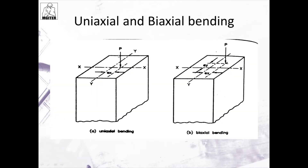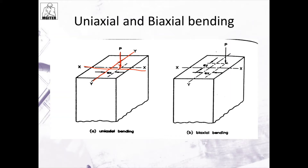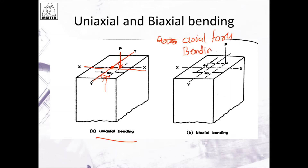Let's check the figure. In uniaxial bending, you can see a force at the x-axis and here is the y-axis — the force is not at the center. This type of loading is called uniaxial bending. In this type of column, we can see both axial force and bending moment at one time.